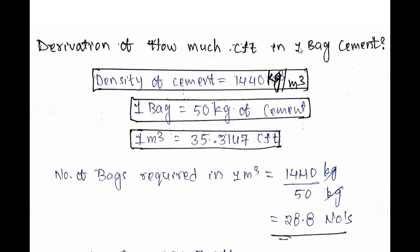If you ask any civil engineer how many cubic feet of volume one bag of cement contains, he will give you the answer within a fraction of a second. But if you ask him how we get it, most of us may not be able to answer. Because we know one bag of cement contains 1.226 cubic feet of volume, but most of us forget how we get it.